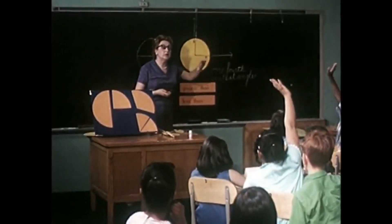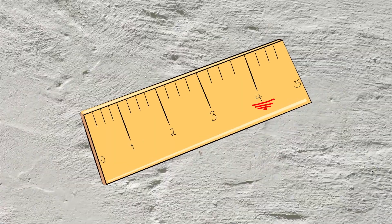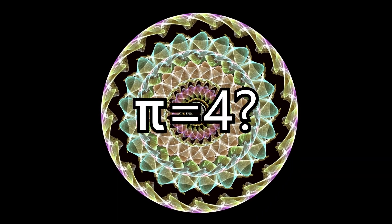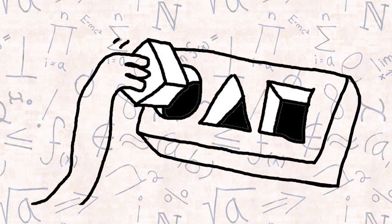But this method just showed us how the square seemingly transformed into the circle, a square that has a perimeter of four. So does this make pi equal four and not 3.14? I don't think so. This is a mathematical fallacy.